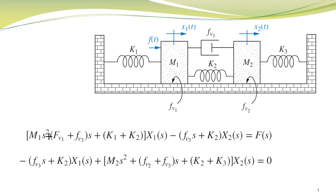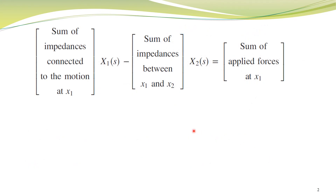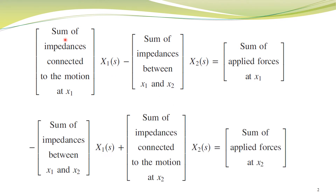To summarize, we can apply this shortcut to obtain a mathematical model for mechanical systems. The first equation is: x1(s) multiplied by the sum of mechanical impedances connected to x1, minus x2 multiplied by the sum of impedances connected between x1 and x2, equals the sum of applied forces at x1. The second equation is: negative x1 multiplied by the sum of impedances common between x1 and x2, plus x2 multiplied by the sum of impedances connected to x2, equals the sum of applied forces at x2.